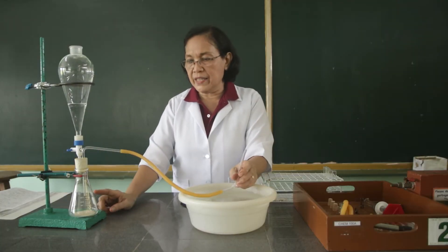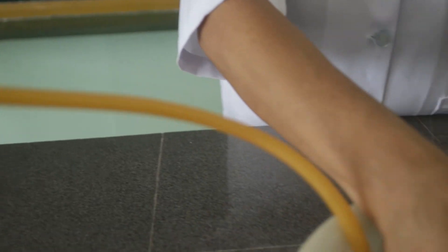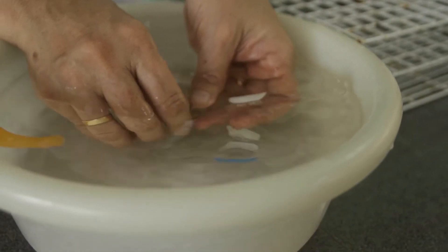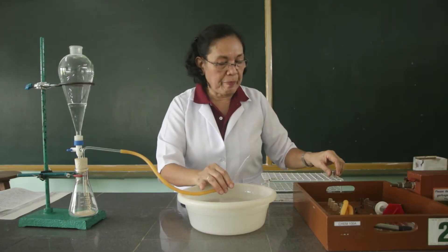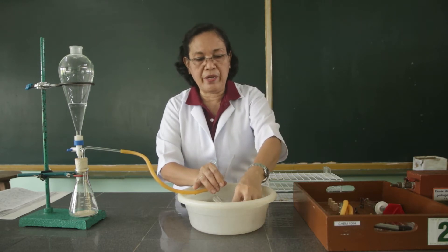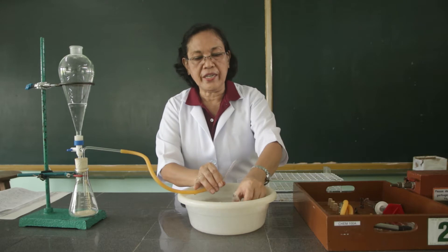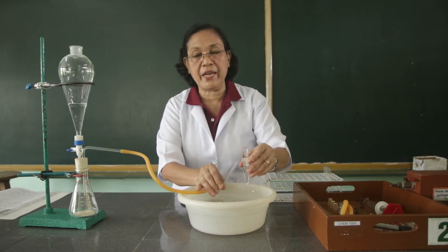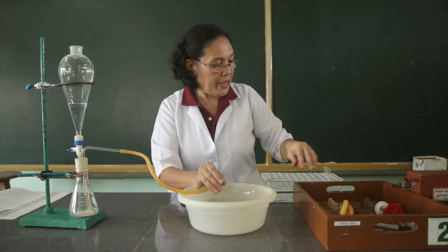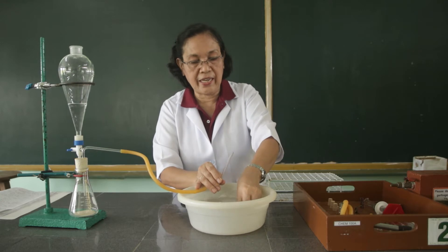The acetylene gas that will be issued out passing through this delivery tube will be collected by using the water displacement method. I am going to prepare test tubes and fill them with water so that the water inside will be displaced by the acetylene gas. We are going to collect five test tubes of acetylene gas.